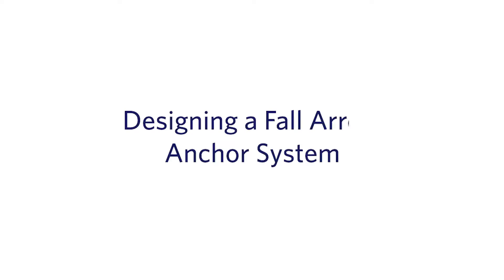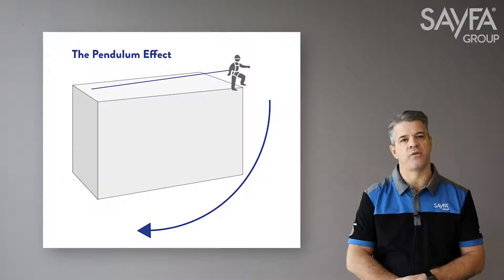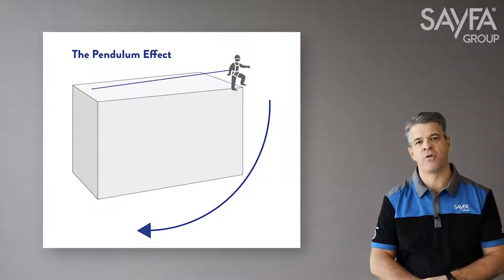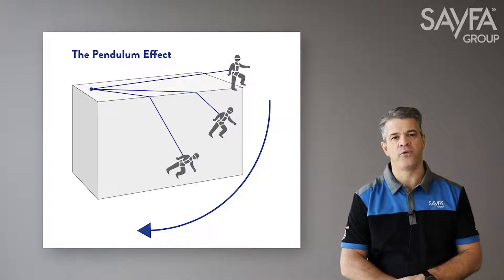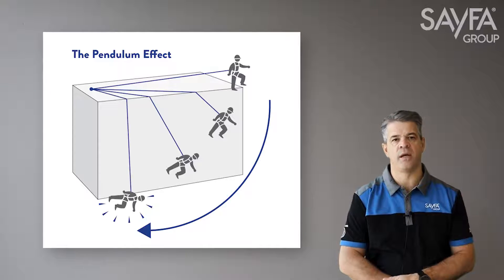Welcome to the Safer product training information session. Designing a fall arrest anchor system — positioning of the anchor correctly is equally as important as installing the anchor correctly, as this determines the safety of the operator whilst using the system. Anchors positioned incorrectly can create a pendulum effect, which allows the operator to fall off the roof and swing uncontrollably.